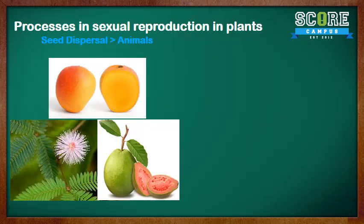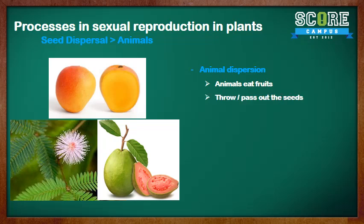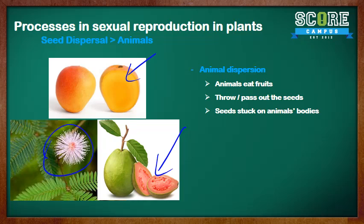Let's look at seed dispersal by animals. When animals eat the fruits, they throw away the seeds — as is true for the mango — or they pass the seeds out through digestion, as is true for the guava. In other cases, like the mimosa plant, seeds have hooks that get stuck on the animal's body and are carried elsewhere.